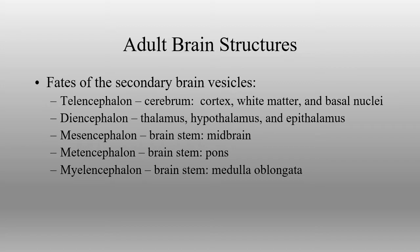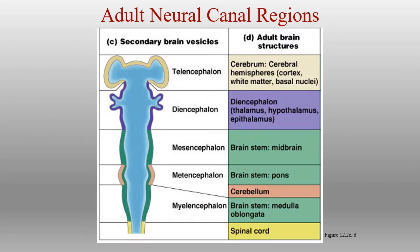The diencephalon gets surrounded by the telencephalon. We have our thalamus, hypothalamus, and epithalamus deep inside the brain. Extending from the diencephalon, we then have the mesencephalon, the metencephalon, and myelencephalon developing into the midbrain, the pons, and — extending off of the pons — the cerebellum, and the myelencephalon to the medulla oblongata.